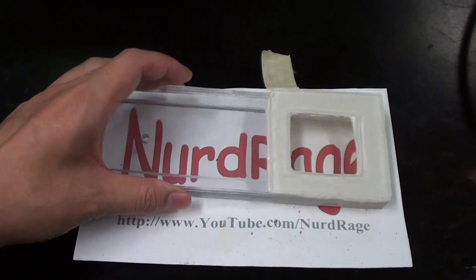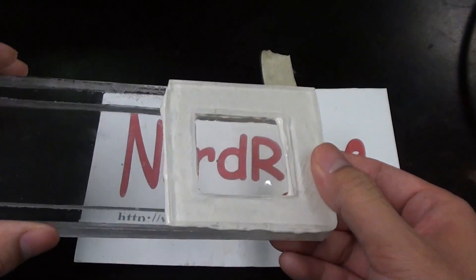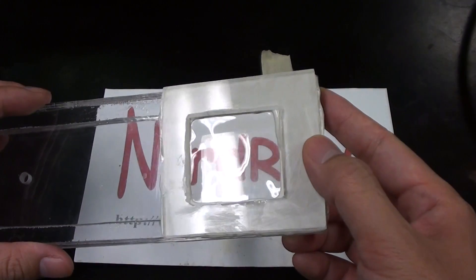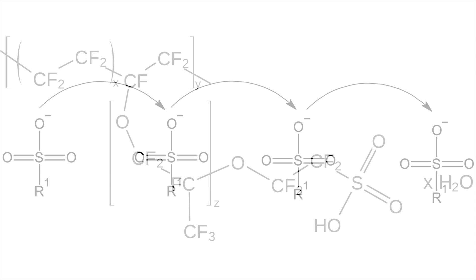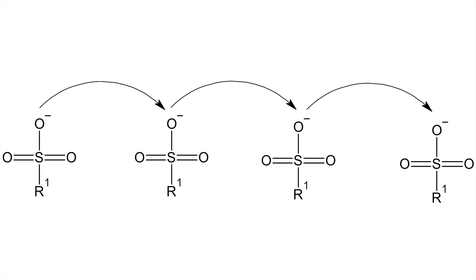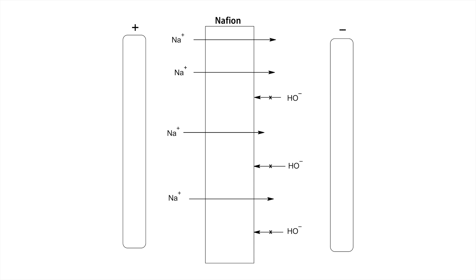I have here a nafion membrane. It's an ionic polymer or ionomer that consists of a fluorocarbon backbone and is functionalized with sulfonate groups. The sulfonate groups inside the polymer facilitate the transfer of cations by allowing them to hop from sulfonate group to sulfonate group inside the membrane. Overall this makes the membrane permeable to cations but blocks anions. It's almost like a magic filter that passes through just cations.